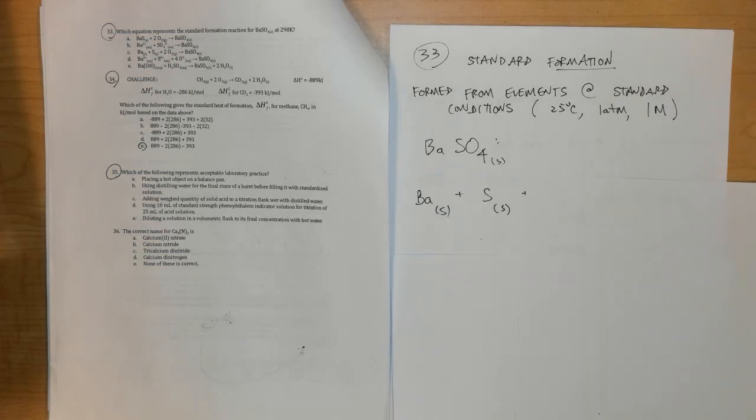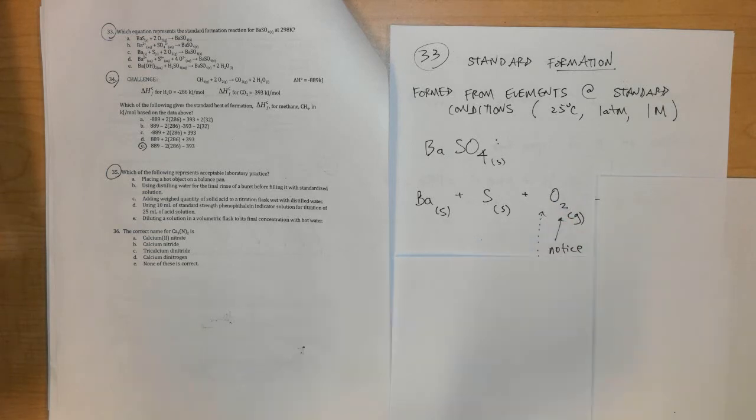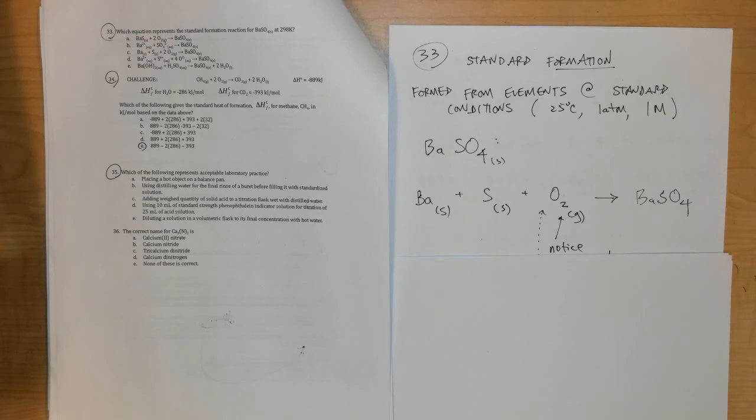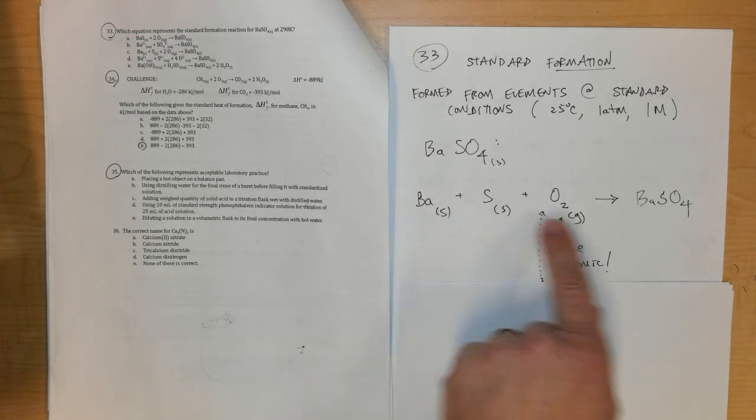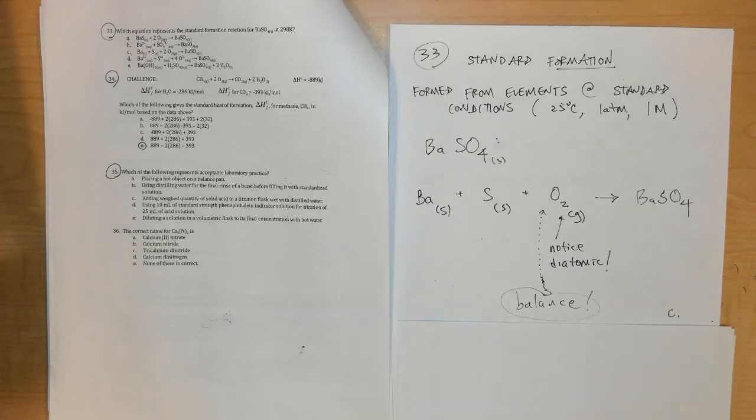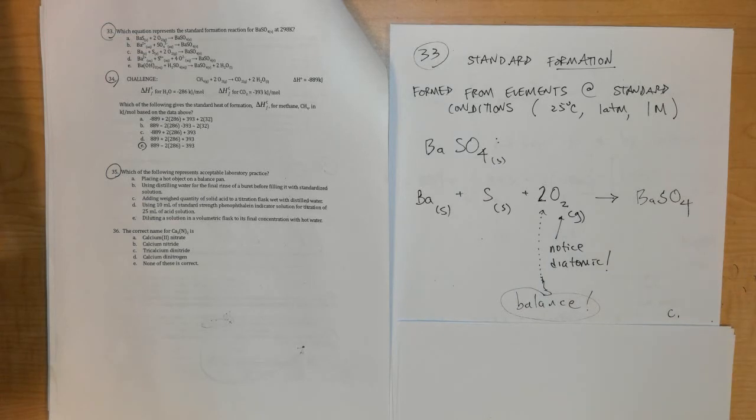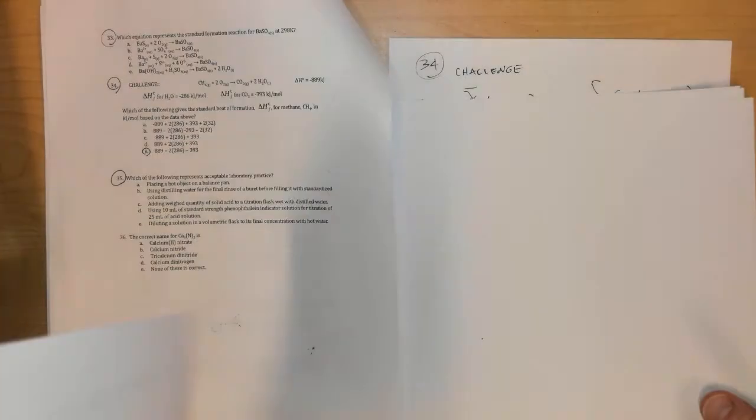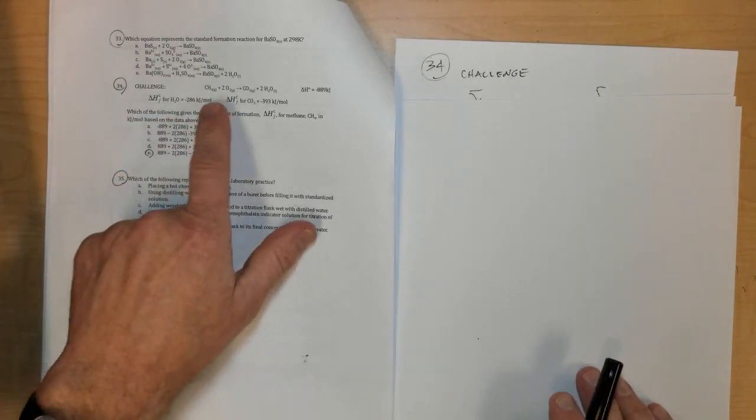Barium in its elemental form is barium solid, sulfur in its elemental form is sulfur solid, oxygen is in its elemental form as O2 - it's diatomic and it's a gas at 25 degrees Celsius - and it's going to make BaSO4. Notice it's diatomic right here, don't miss that part, and it has to be balanced as well. Make sure that you put a 2 in front of here because there needs to be four oxygens to match up with the four oxygens here, which turns out to be C in number 33.